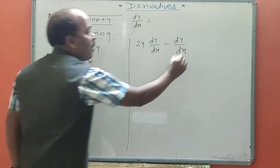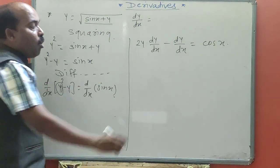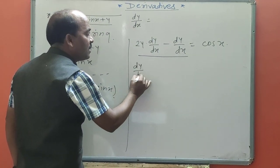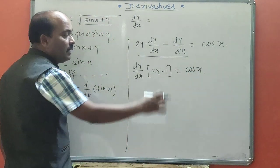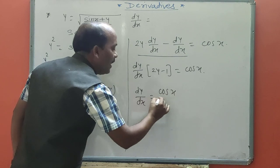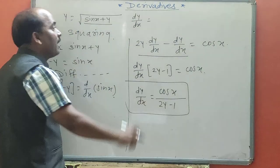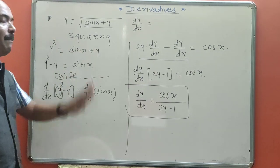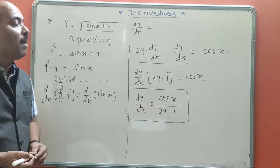The derivative of sin x is cos x. Both dy/dx terms are separate, so take dy/dx as common directly. Remaining in bracket: (2y minus 1) = cos x. Finally, transfer the bracket to RHS: dy/dx = cos x / (2y minus 1). This is the derivative of the given function — first squaring both sides, then separating the y variable and differentiating.